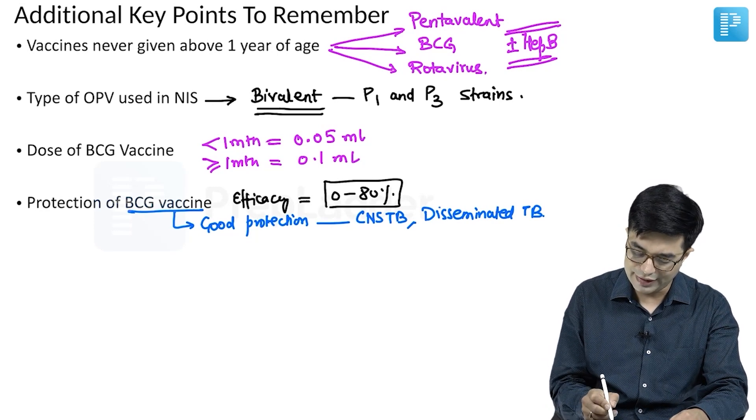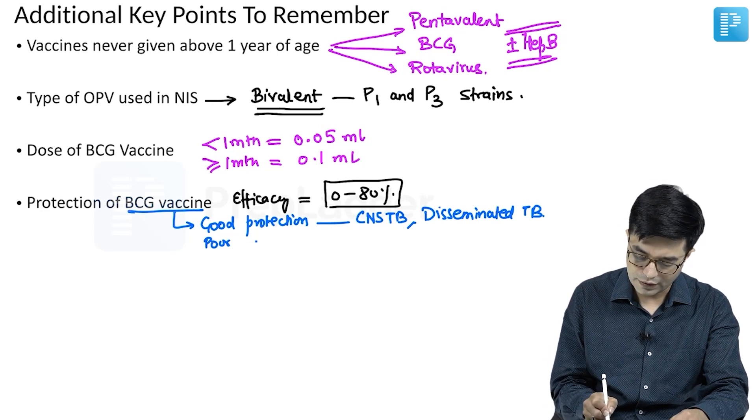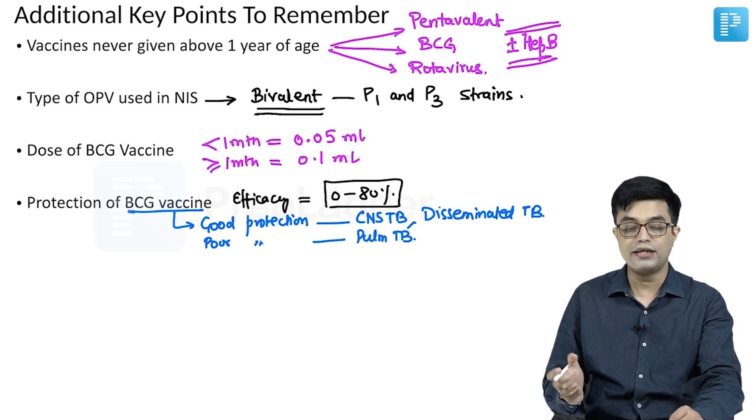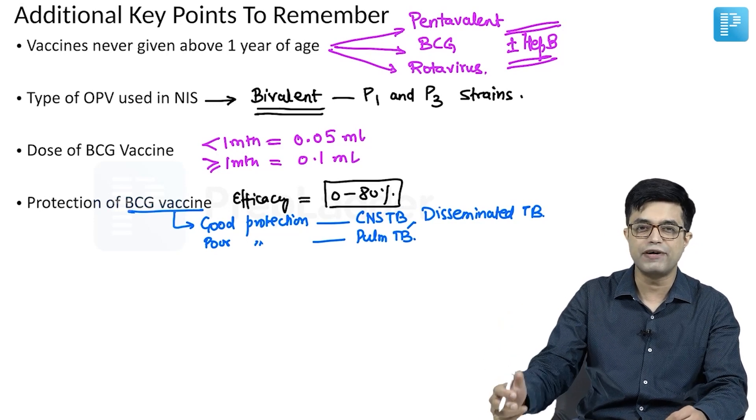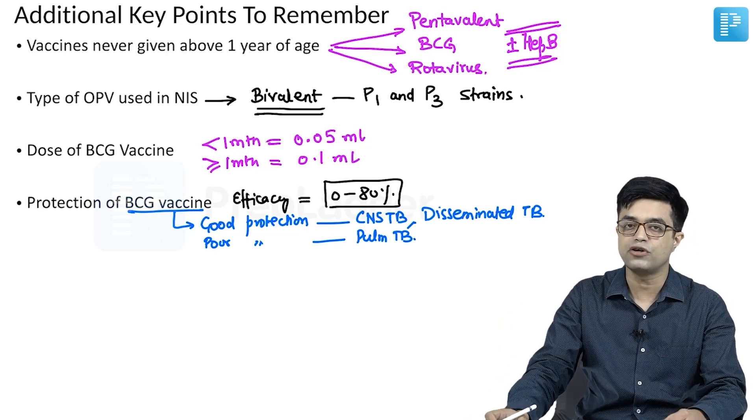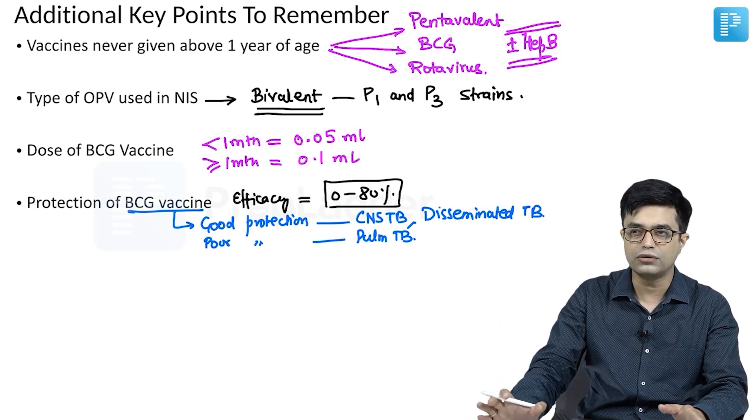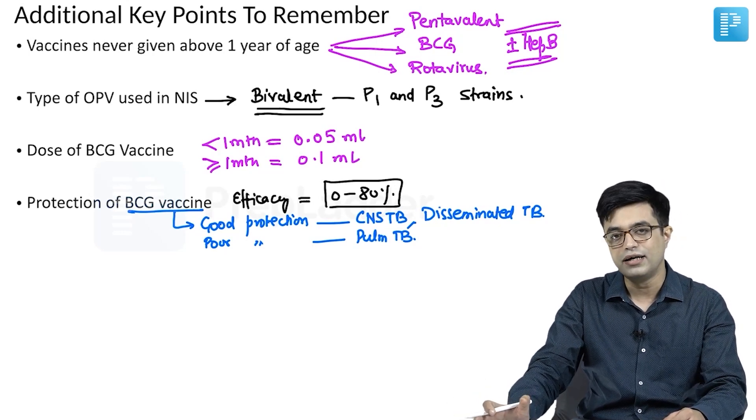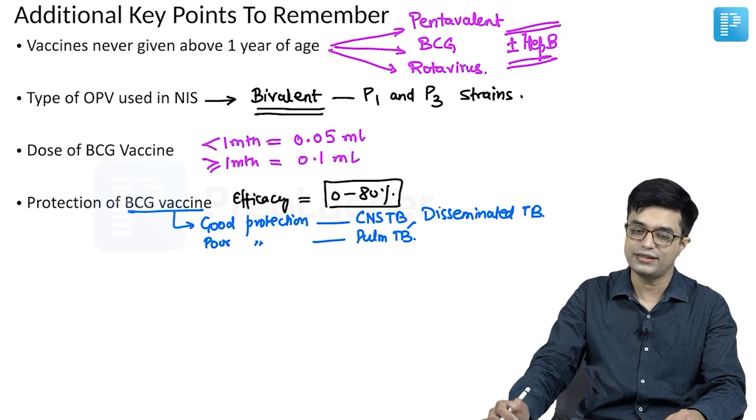But the protection is poor against pulmonary tuberculosis, and that is why giving BCG does not in most cases prevent the onset or occurrence of pulmonary tuberculosis. Although the extrapulmonary forms, particularly CNS, miliary TB, and disseminated tuberculosis, their risk is decreased.